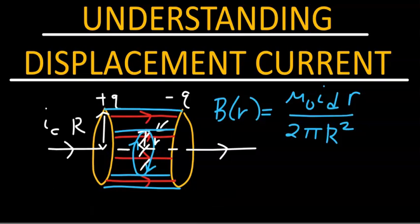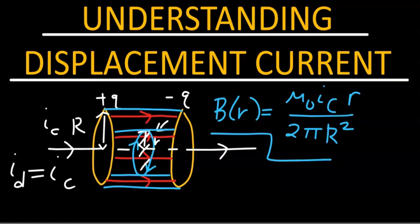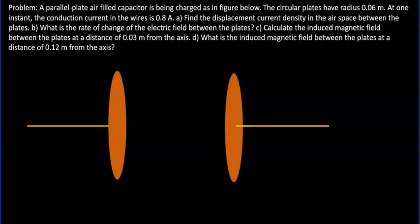Since we know from current continuity that the displacement current Id must be of the same magnitude as the conduction current in the wires, we can simply write Ic in that expression. That completes the expression for the magnetic field in the region between the two plates. Let's look at a problem based on the concepts we have just covered.